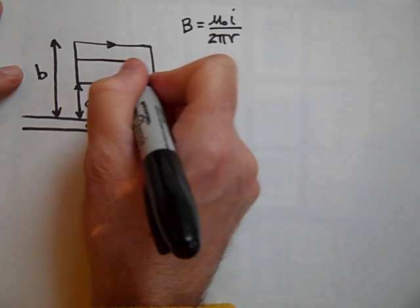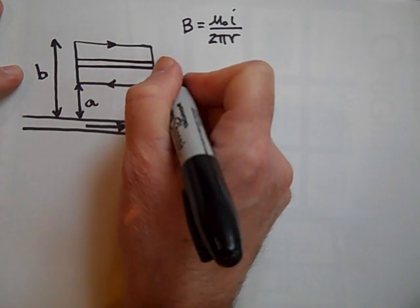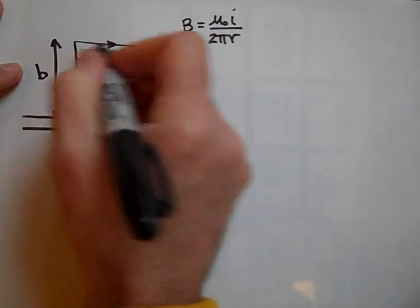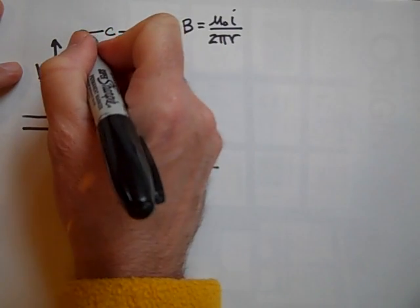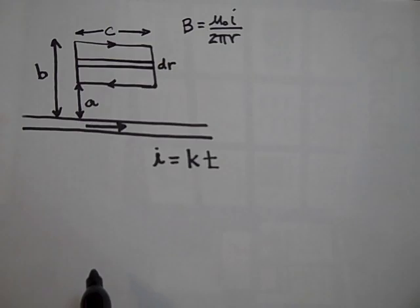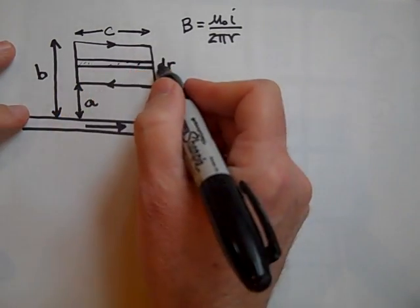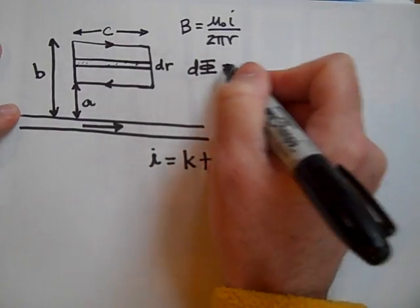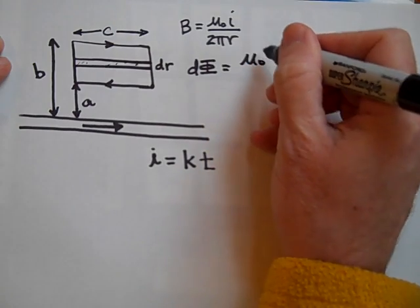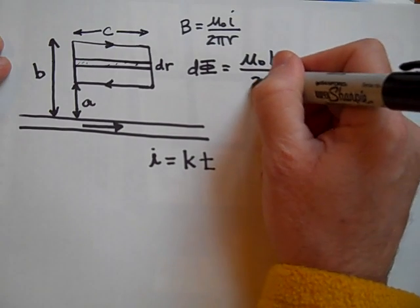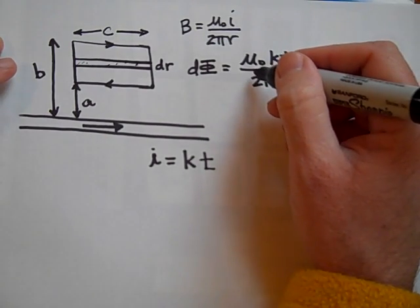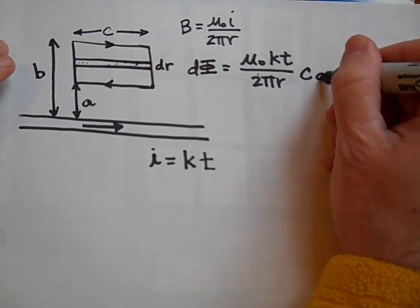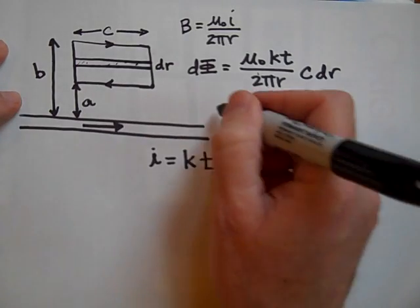That means the flux is different everywhere because the field is different everywhere. What we're going to do is put it in a little rectangle with a very thin dr. The width of this rectangle — let's say it's c. So the little flux dΦ is going to equal the B there, which is μ₀ times i (where i = kt), all over 2πr, times the area, which is c times dr.